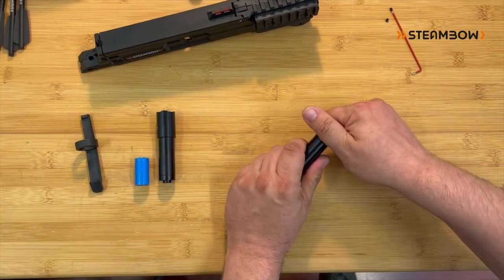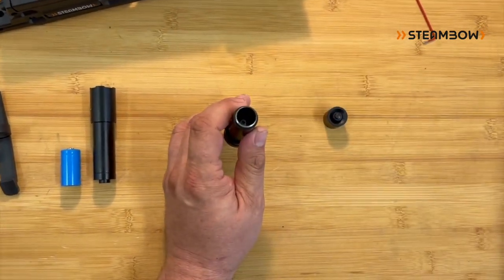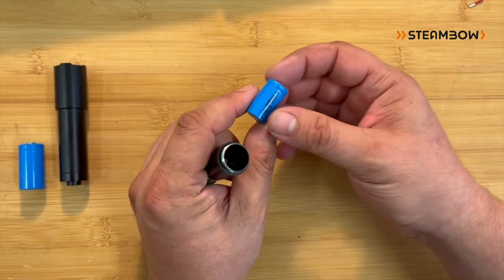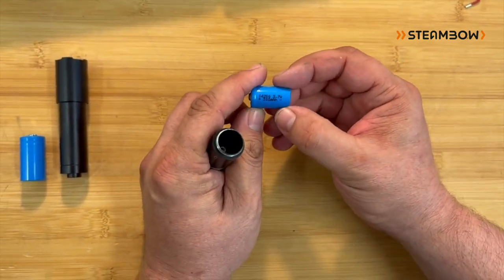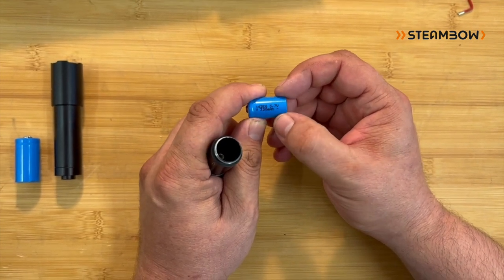The laser unit is supplied with a 14-50 type battery. Here it says 3.7 volts but many aftermarket batteries will have 3.6 volts. This doesn't matter.